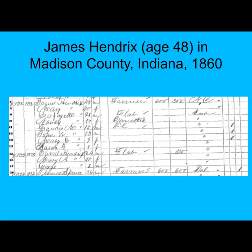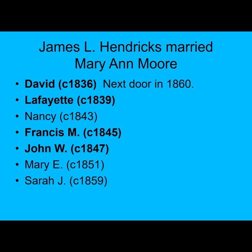In 1860, James Hendricks was a farmer living in Madison County, Indiana. He was age 48, a native of North Carolina. The census shows he owned $600 in real estate and $300 in personal property. He and his wife, Mary Ann, had at least seven children shown with them on the census. We know that all four of his sons served in the war, but only one of them came home alive.